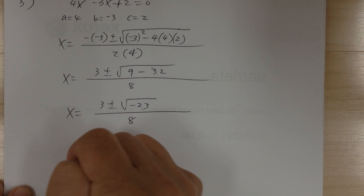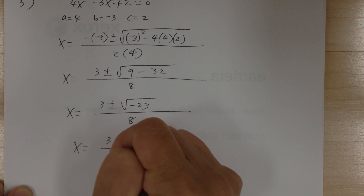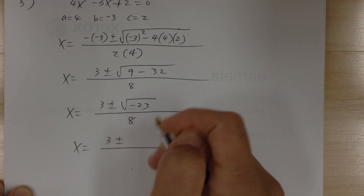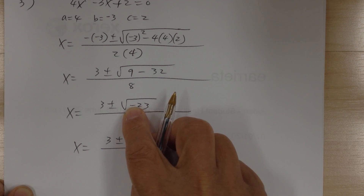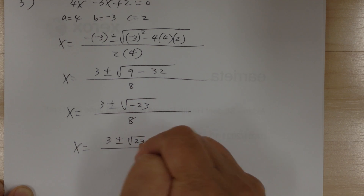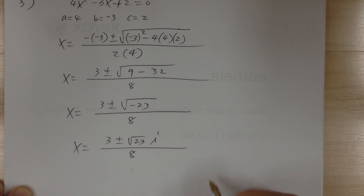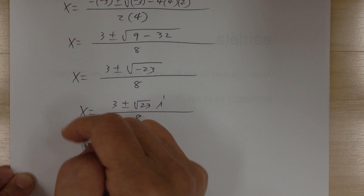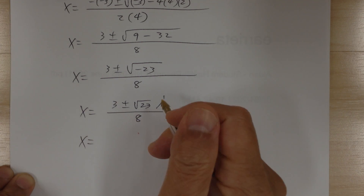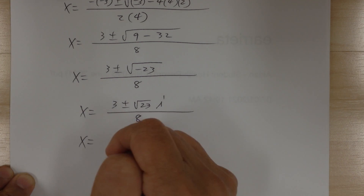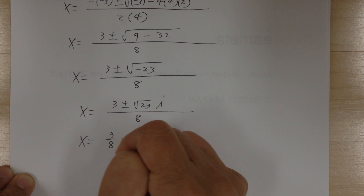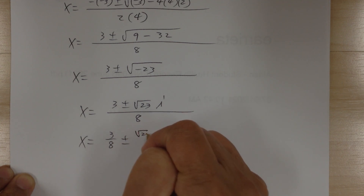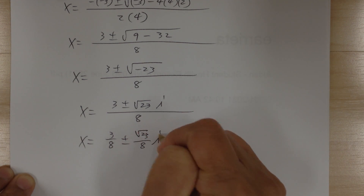Since the square root of a negative becomes i, the result is (3 ± √23 · i) / 8. When you have complex numbers, separate the real part from the imaginary part and write in a + bi form: 3/8 ± (√23/8)i.